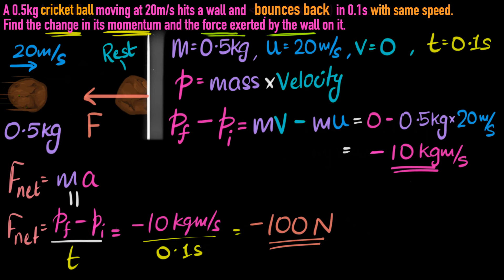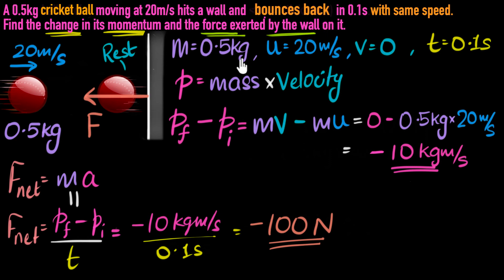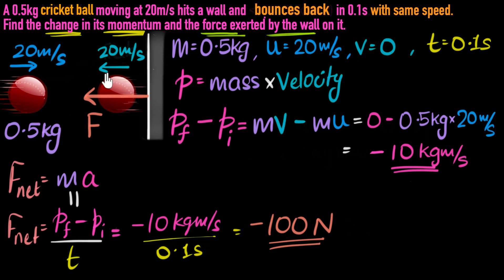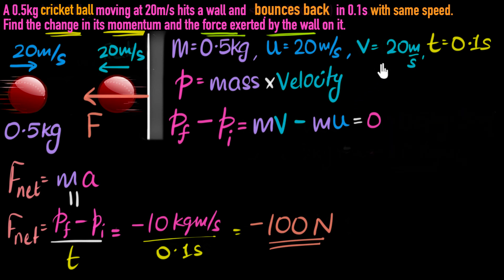If we replace the clay ball with a cricket ball, the only difference is that after hitting the wall it bounces back with the same speed of 20 meters per second — so it's no longer at rest. At first I might say the final velocity is 20 meters per second, meaning the change in momentum is zero, because the final and initial speeds are the same and mass is unchanged — so initial and final momentum are equal. But that can't be right.